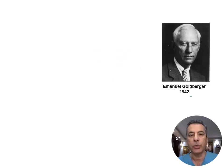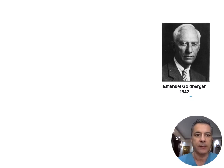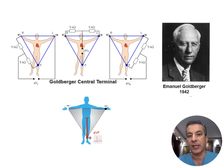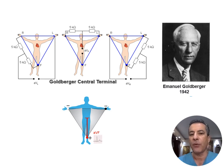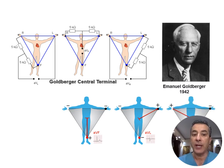In 1942, Dr. Emmanuel Goldberger from Lincoln Hospital in New York attempted to utilize the Wilson Central Terminal for recording additional limb leads, but encountered small signals. To address this, he augmented the limb leads by connecting the negative poles of his recording electrodes to the opposite limbs using five kilohm resistors. This augmentation resulted in a 50% increase in signal strength, leading to the introduction of augmented foot lead (aVF), augmented left lead (aVL), and augmented right lead (aVR), effectively expanding the number of limb leads from three to six.